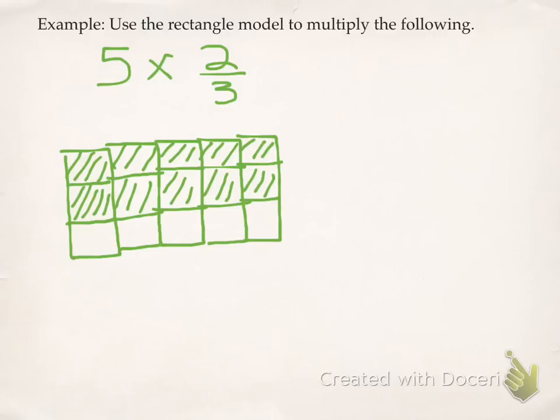So to get my answer, I need to count up the shaded regions. So I've got 1, 2, 3, 4, 5, 6, 7, 8, 9, 10. So I have 10 shaded regions, and each rectangle is broke up into thirds. So that's 10 over 3.